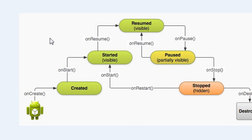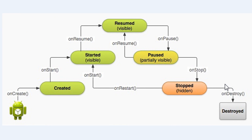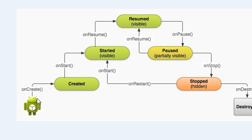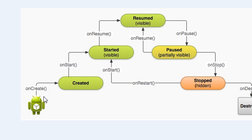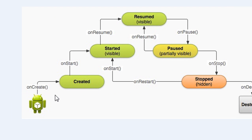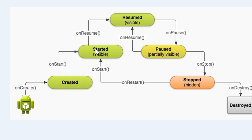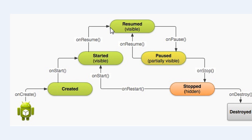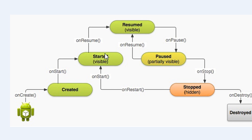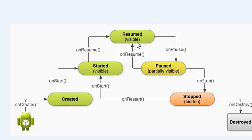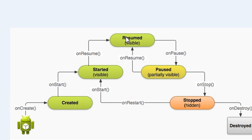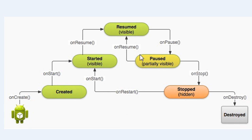Here is the lifecycle graph of an activity. When an activity is created, it will call the onCreate method. After executing onCreate, the system will call the onStart method, and after executing onStart the activity is visible to the user. Before coming to the foreground, the system also calls the onResume method. After executing onResume, the activity is completely visible and ready for interacting with the user.